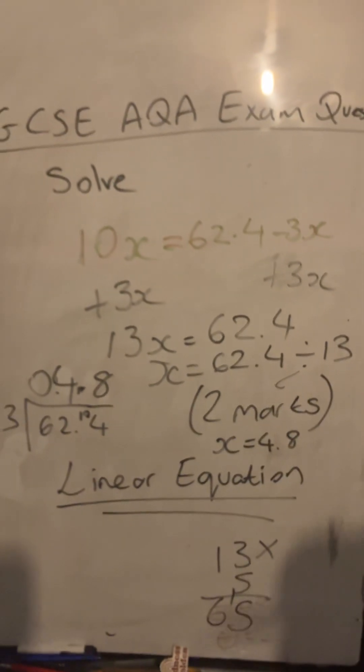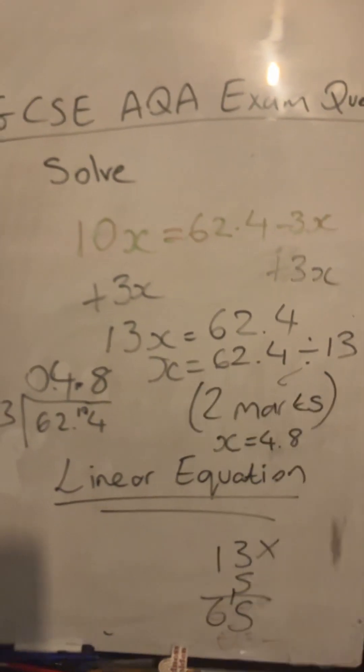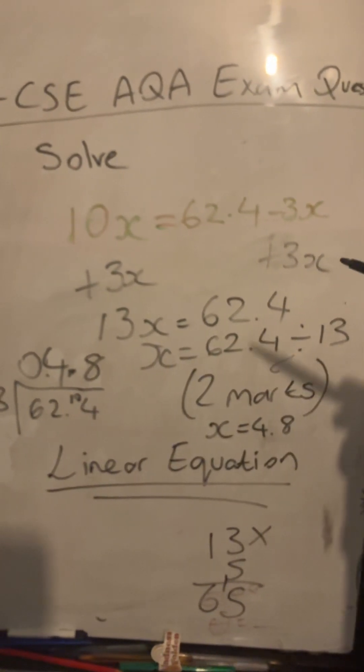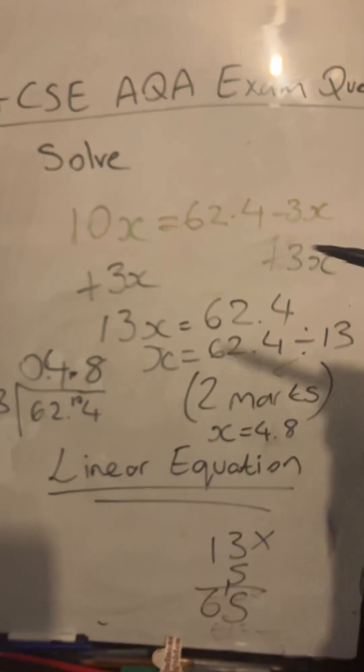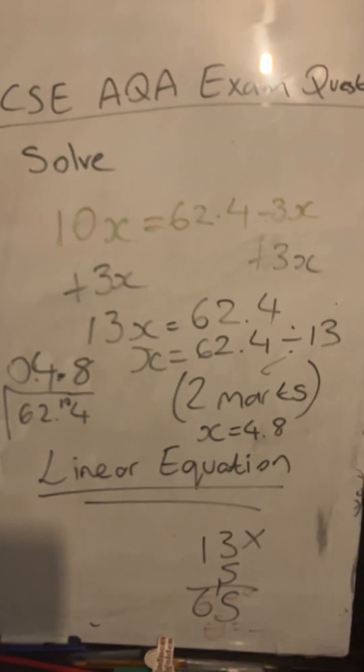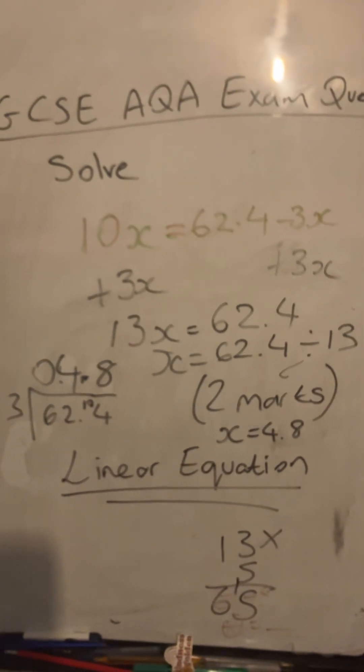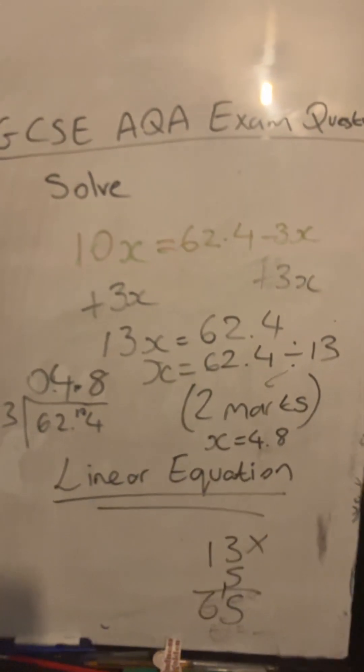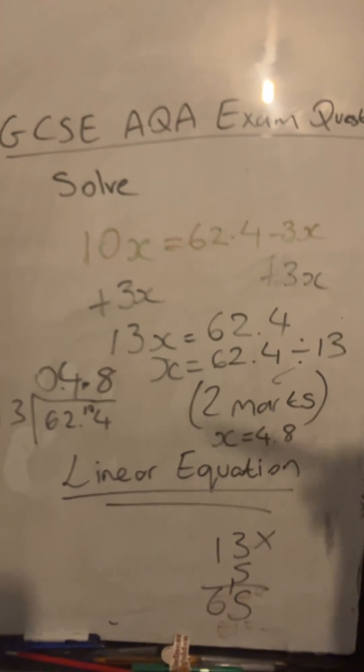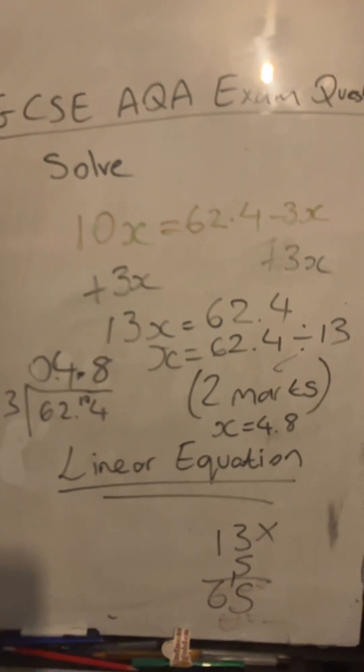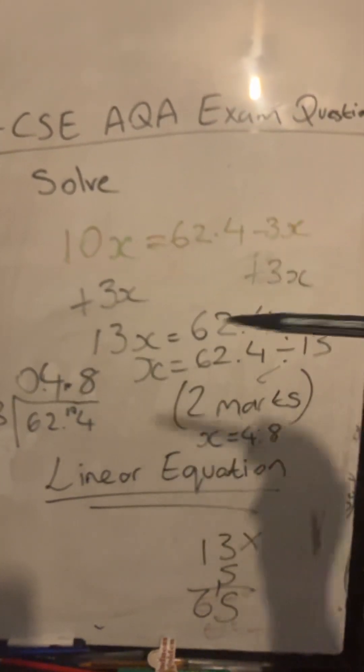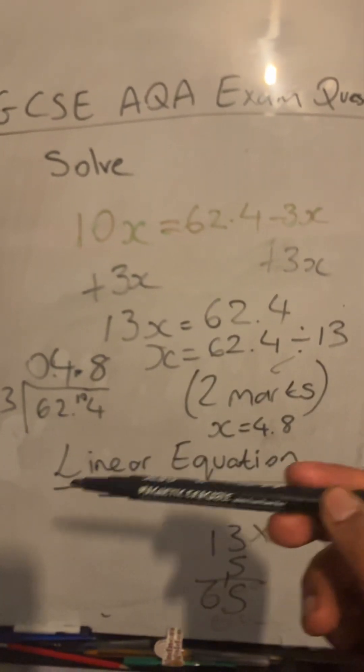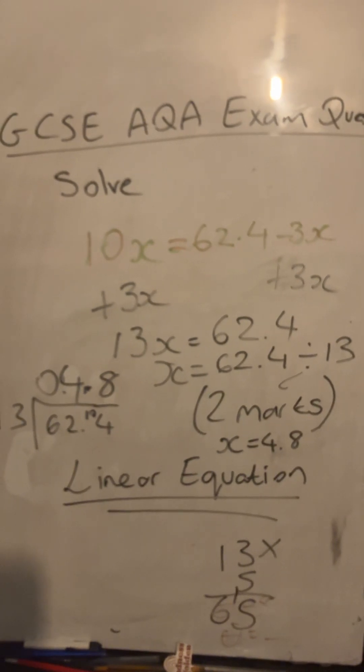And it's a two-mark question because it requires two steps to solve the equation. First step is to add 3x to both sides, and then divide by 13 to work out the answer for x. So make sure that you are happy with these sorts of questions that appear on your exam, guys, for GCSE higher and foundation. This topic is looking at algebra, specifically solving linear equations involving algebra.